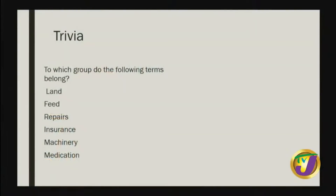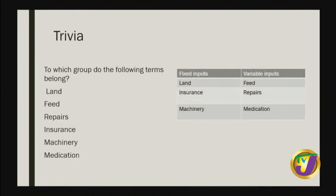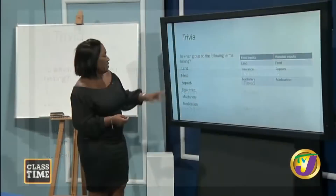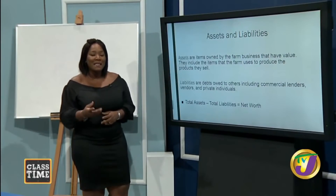Trivia question: to which group do the following terms belong — land, feed, repairs, insurance, machinery, medication? Land, insurance, and machinery are fixed costs because increasing or decreasing production does not affect the fact that you have a tractor on the farm. Feed, repairs, and medication are variable costs — if you increase production, you have to buy more feed, repair the tractor more, and buy more medication for your animals.